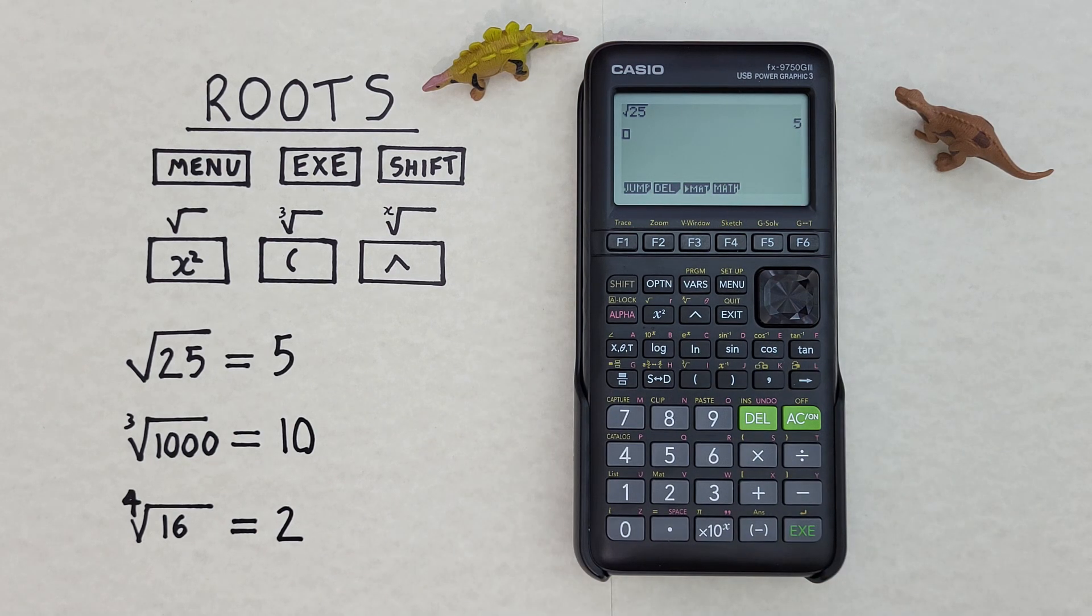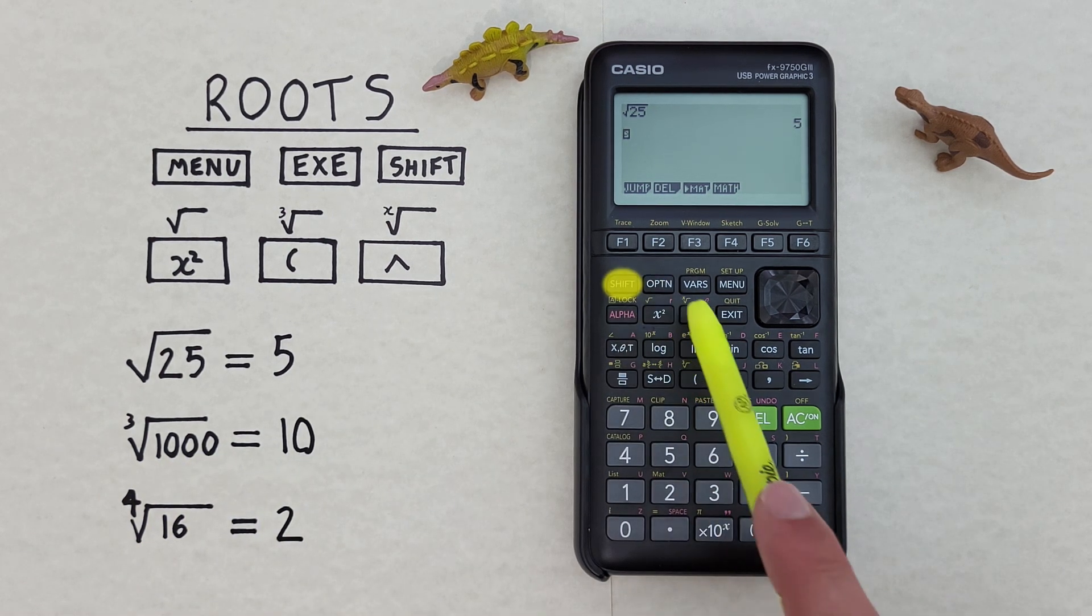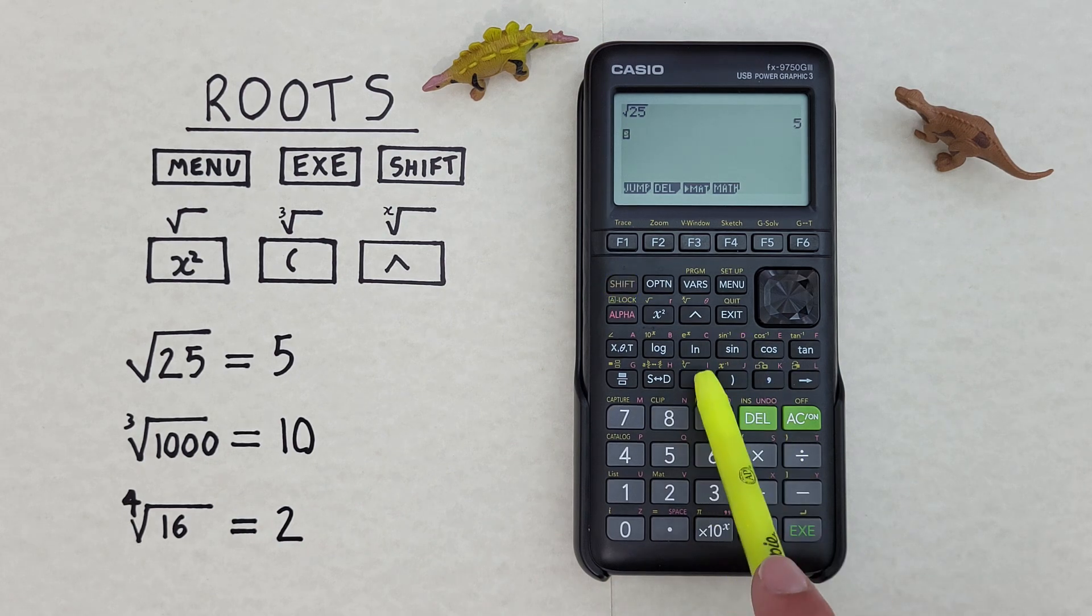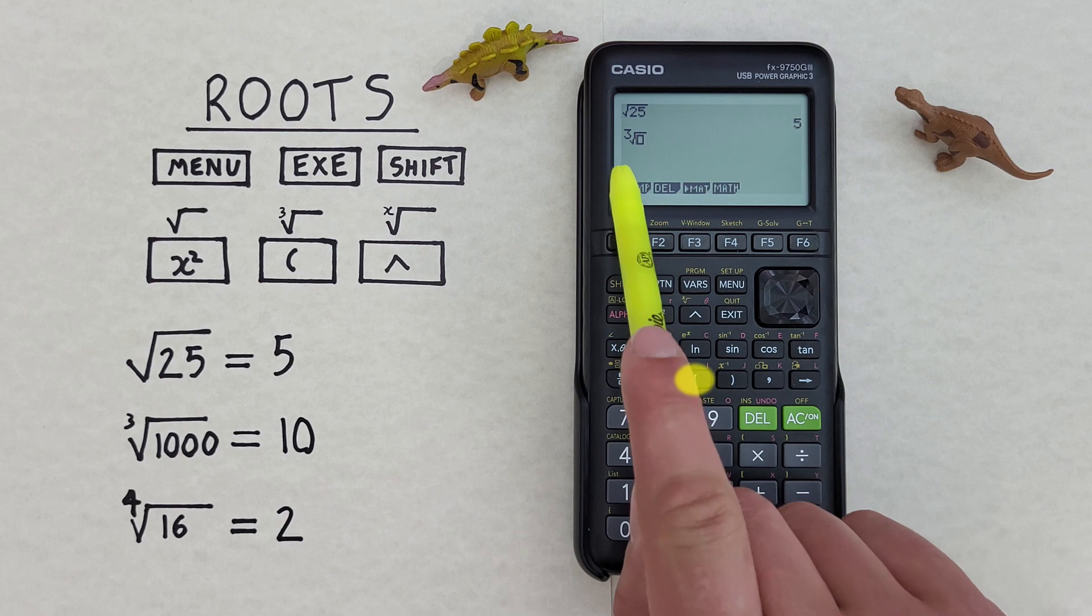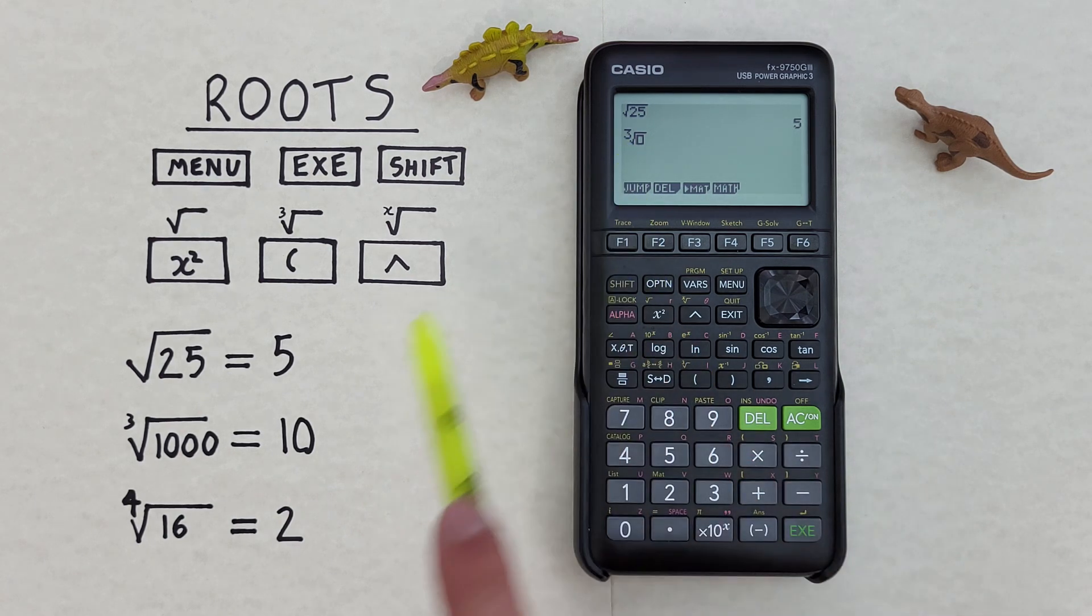What about a cube root? Let's say we want to find the cube root of 1000. To do this, we press the shift key and then the left bracket key with the shift function of cube root. There we go. We see a 3 in the root position there. And then we enter 1000 in the box.